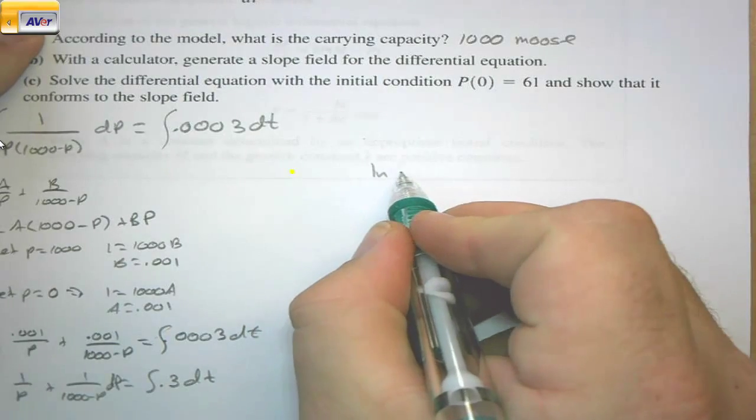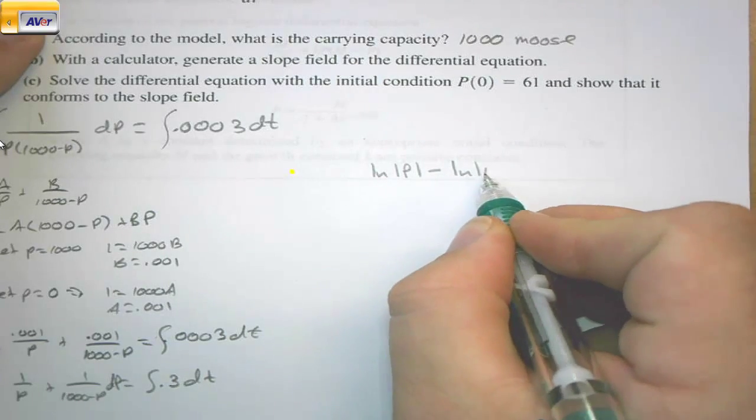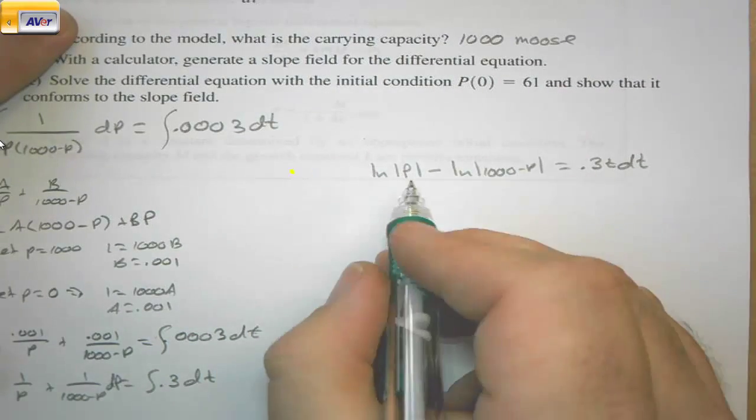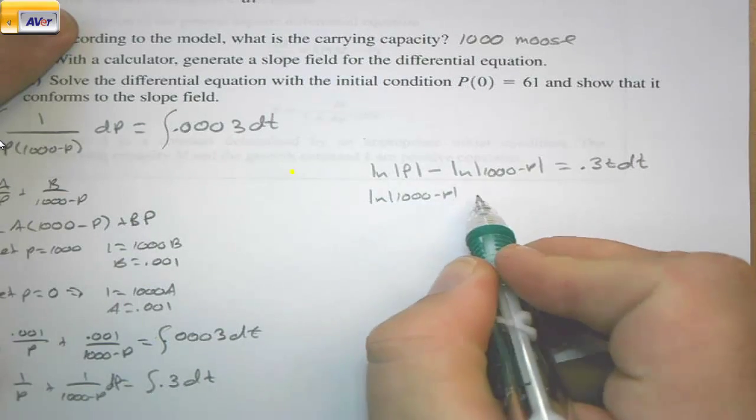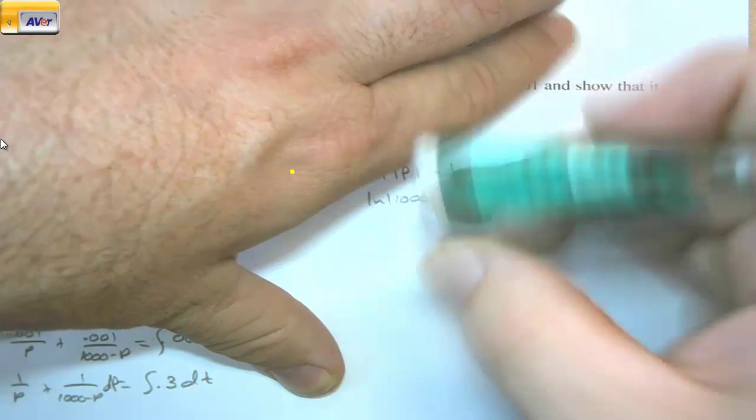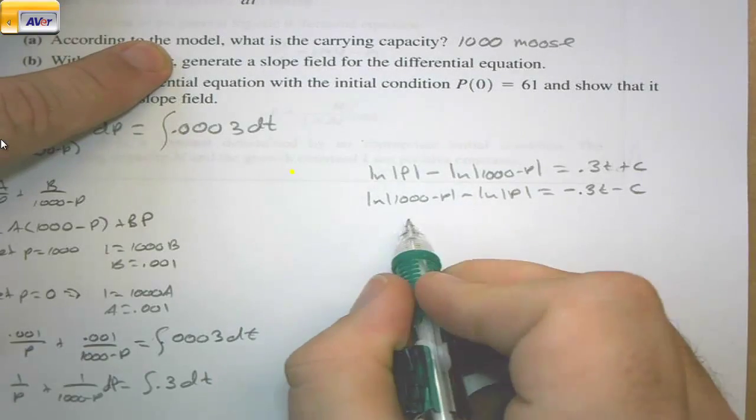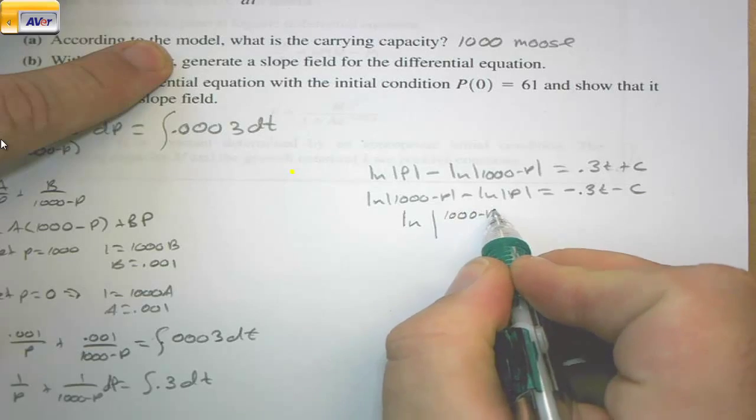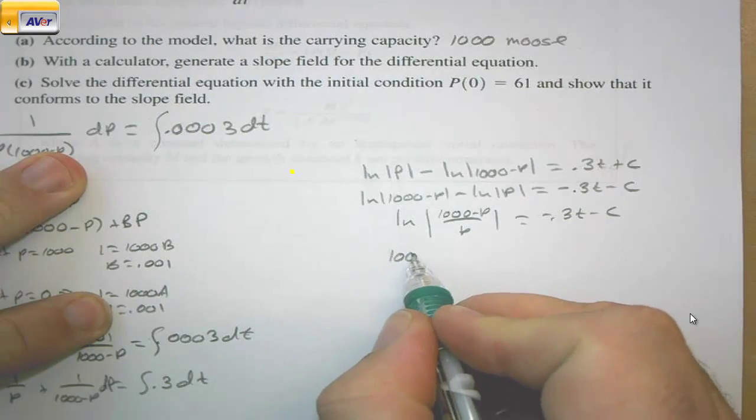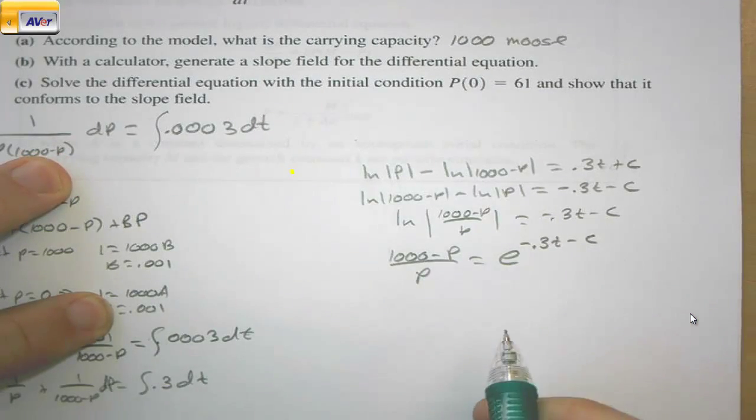The integral of 1/P is the natural log of the absolute value of P. And then we have minus the natural log of |1000 - P|. And that's equal to 0.3t + C. Let's run a negative through this. We have ln|1000 - P| - ln|P| = -0.3t - C. And the reason we want to run a negative through is because now I can write ln((1000 - P)/P) = (1000 - P)/P = e^(-0.3t - C). So we're going from log to exponential form.